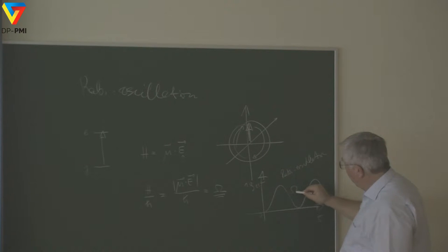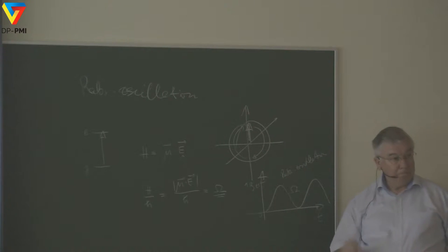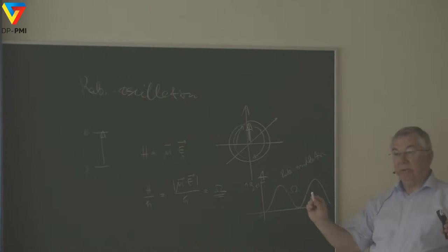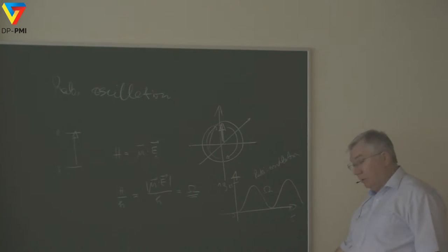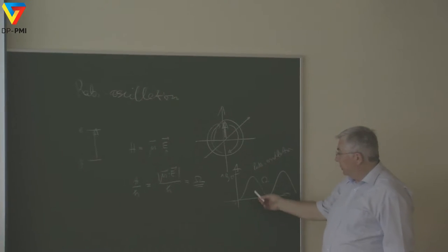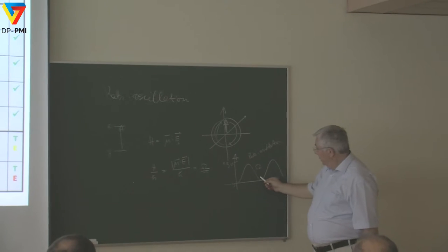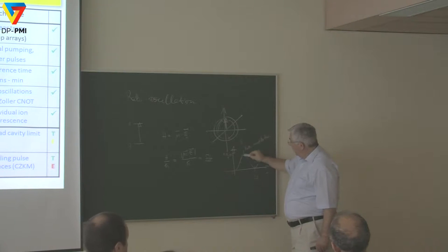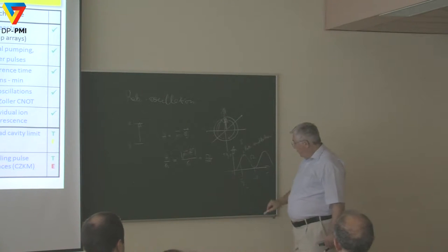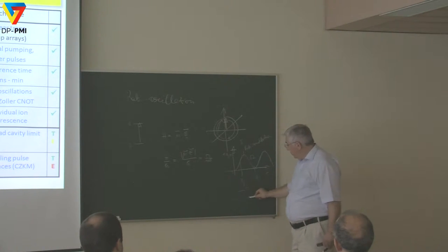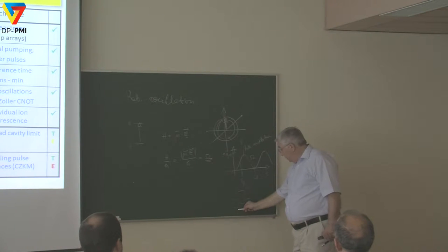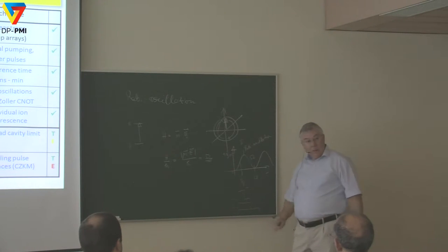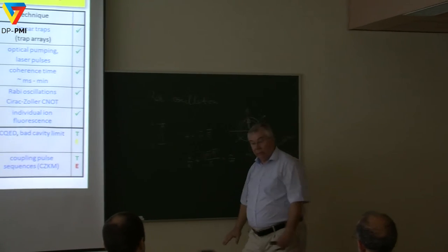This Rabi frequency is very important — we will always talk about Rabi oscillations and partial Rabi oscillations. When I rotate the system about 2-pi, that's a full cycle. Pi rotation brings the system to the excited state. Pi-over-2 is a half-rotation. When we talk about a pi-over-2 pulse, we apply the radiation only until the system reaches that point. A pi pulse flips the state, and a 2-pi pulse returns it.